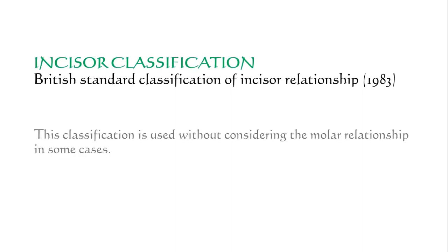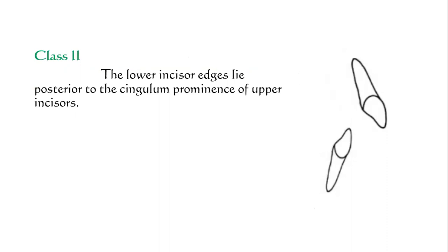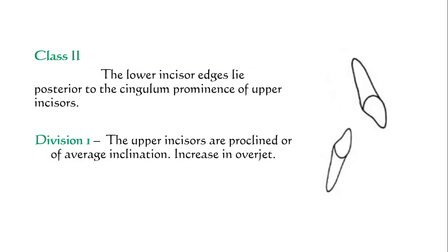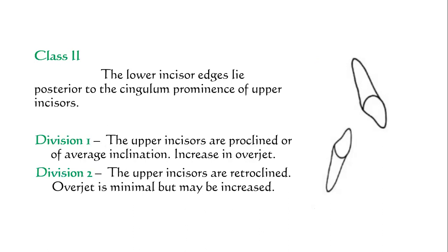Next is the incisor classification, introduced by the British Standard classification of incisor relationship. This classification is used without reference to molar relationship in some cases, and is prone to inter-examiner errors. In Class I incisor relationship, the lower incisor edge occludes with or lies immediately below the cingulum of the upper incisors. In Class II, the lower incisor edges lie posterior to the cingulum prominence of the upper incisors.